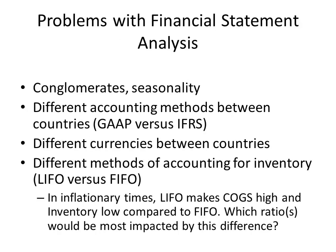Now we'll finish this lecture with a brief review of some problems with financial statement analysis. First of all, conglomerates don't lend themselves easily to financial statement analysis. Recall from the lecture on ratios that we can only really compare firms within the same industry. Conglomerates by definition are made up of divisions from many different industries, so one would have to find a conglomerate with exactly the same composition of investment in exactly the same industries in order to compare — and this is almost impossible. Financial statement analysis for comparison purposes between companies is lousy for conglomerates.